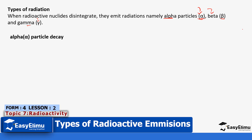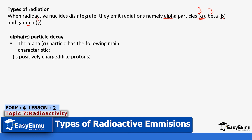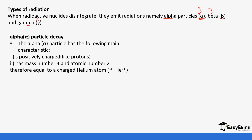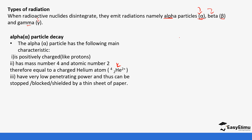The alpha particle has the following characteristics: it is positively charged, like protons. This particle is positive and has a mass number of four and an atomic number of two. Therefore it is equal to a charged helium, and it has very low penetrating power — thus it can be stopped or blocked by a thin sheet of paper.